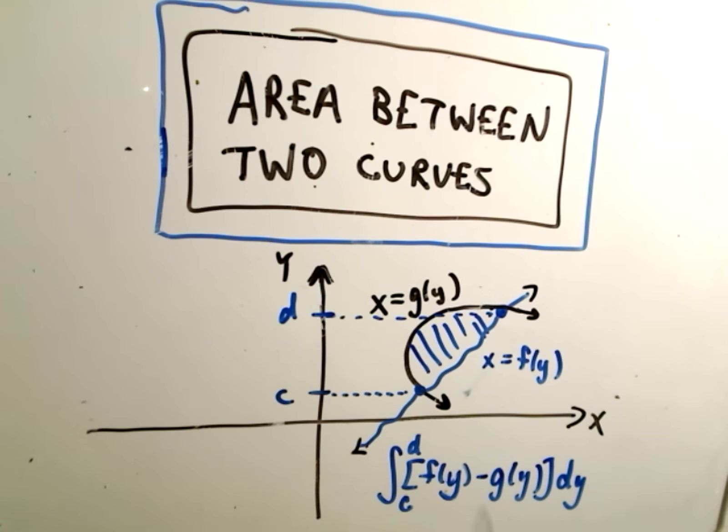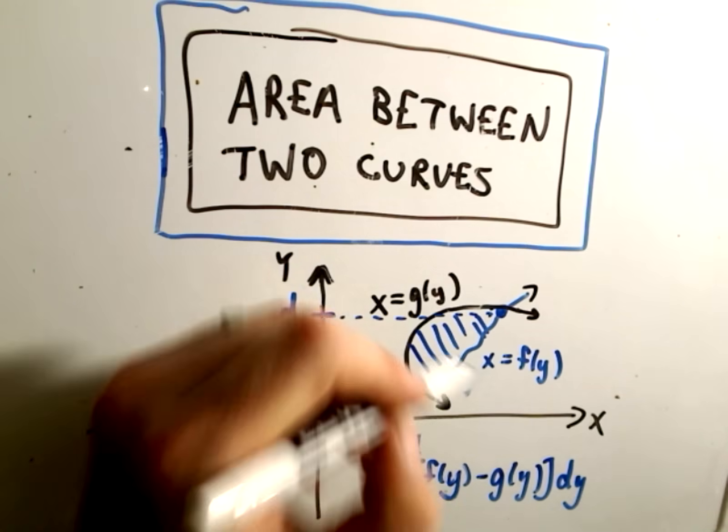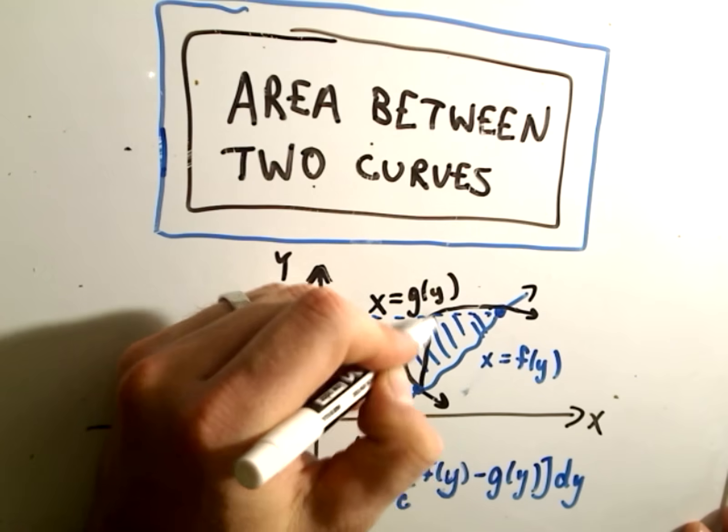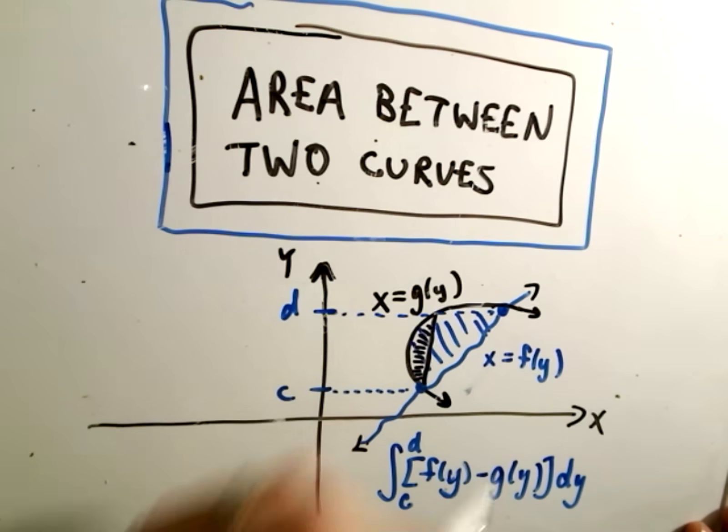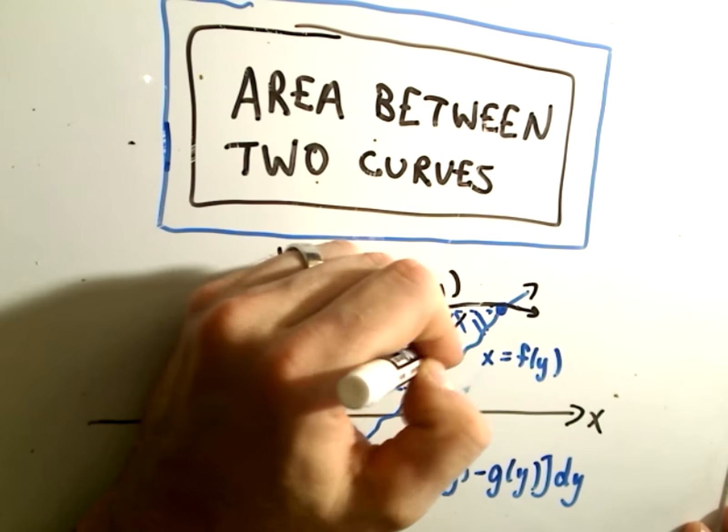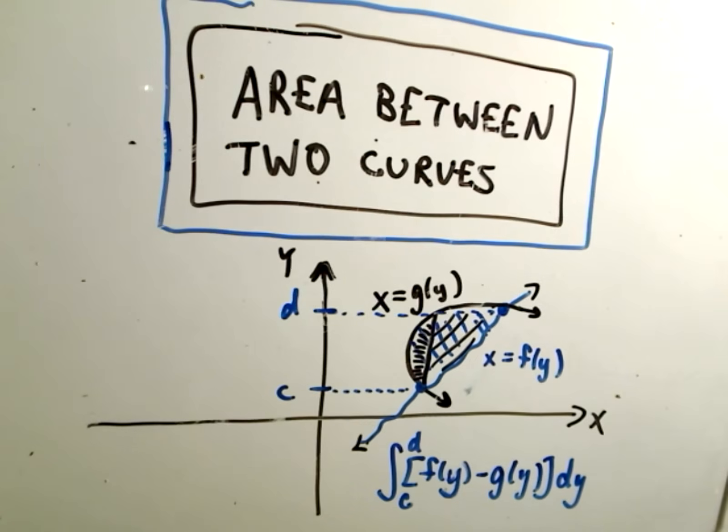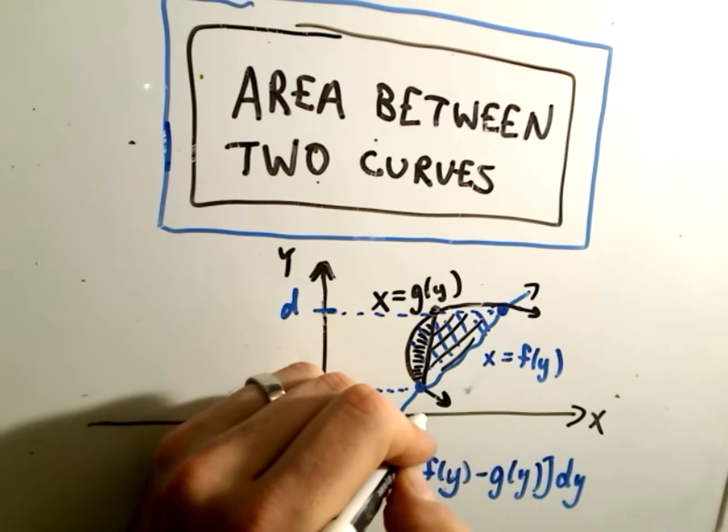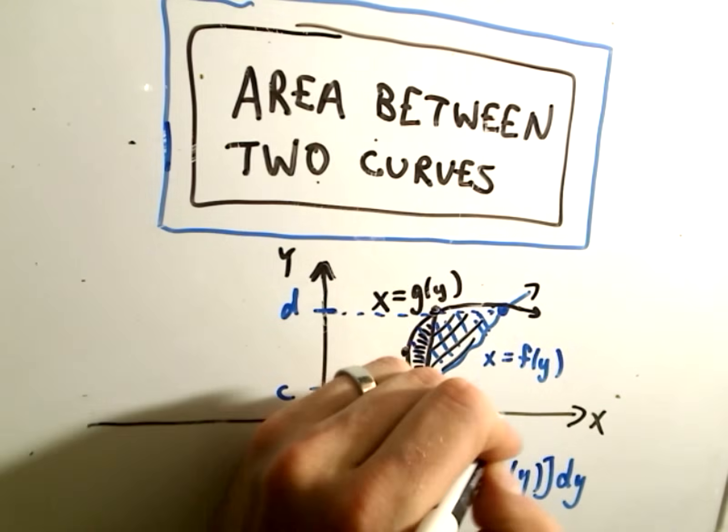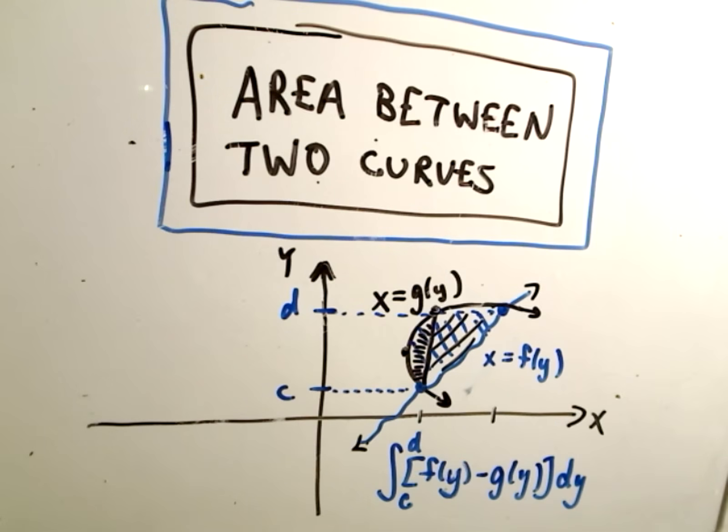So rightmost minus leftmost. And notice if you integrated this with respect to x, you would have to actually chop it up into two different integrals. You would have to do something with respect to x on the left side, and then on the right side you would have to set up a totally different integral. And you'd have to find more points of intersection, because now you need the x coordinates. It would just be a lot more tedious to do.